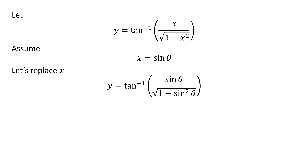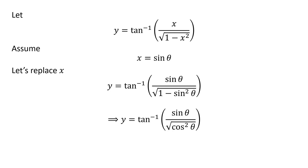Replacing x by our assumed value in y gives us y is equal to inverse of tangent of sine of theta upon square root of 1 minus square of sine of theta. We know 1 minus square of sine of theta is equal to square of cosine of theta, so y is equal to inverse of tangent of sine of theta upon square root of square of cosine of theta.